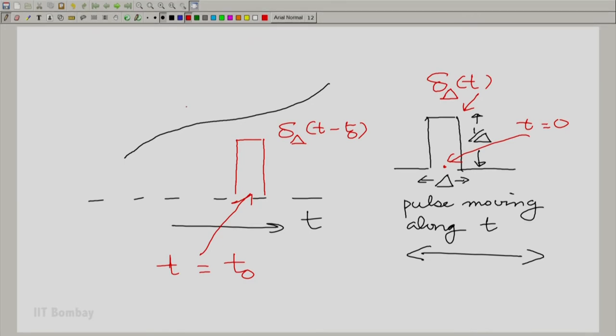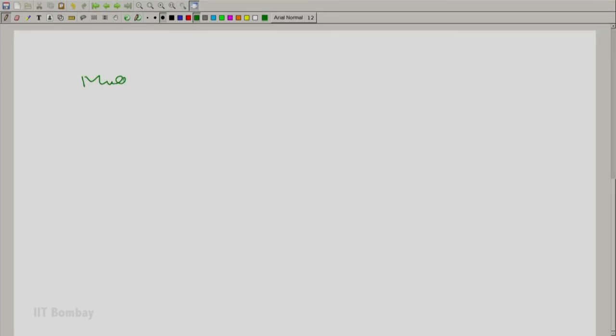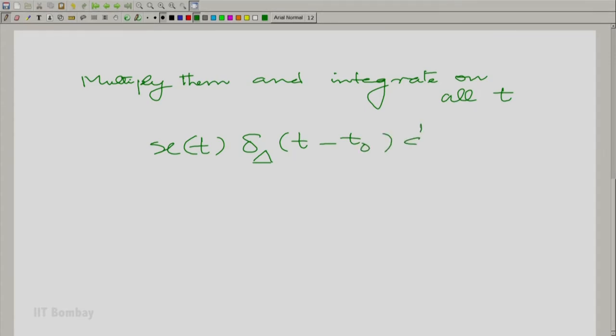And the original function that I have here is x of t as a function of t. Now, I multiply these two and let us see what I get. Multiply them and integrate. Integrate on all time. So what I am saying is take xt delta capital delta t minus t0. Integrate with respect to t for all t all over the time axis. What do I get?